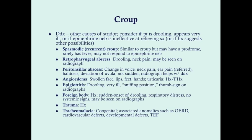Epiglottitis patients come in looking very ill and tend to be drooling, which you don't see much in croup. They also tend to be in the tripod position — neck somewhat flexed and leaning forward as if sniffing something. That position is very characteristic for epiglottitis. On a lateral radiograph of the neck, you'll see the thumb sign — a swollen epiglottis posterior to the hyoid bone — compared to a normal epiglottis.